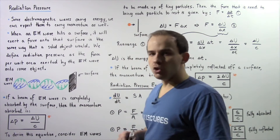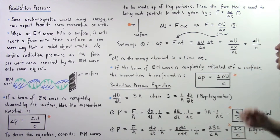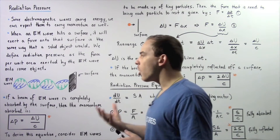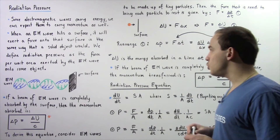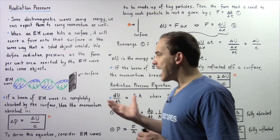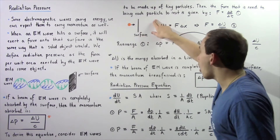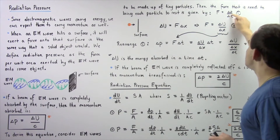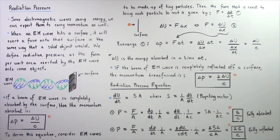Now let's actually derive this equation. In order to derive it, we have to consider electromagnetic waves to be composed of tiny particles. This concept is known as the wave-particle duality of electromagnetic waves, and we'll talk about this in greater detail in a future lecture. If we consider our electromagnetic wave to consist of tiny particles, then the force needed to bring each particle to rest is given by Newton's second law of motion: force equals the change in momentum divided by the change in time. Let's label this as equation one.